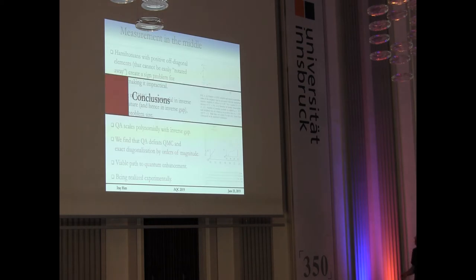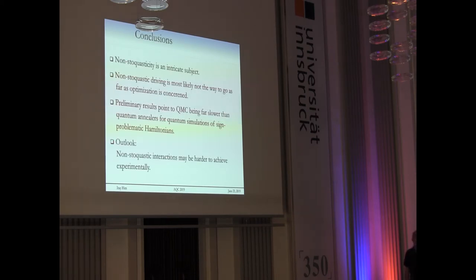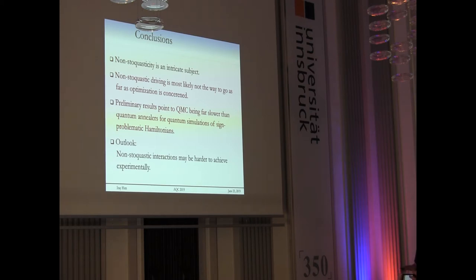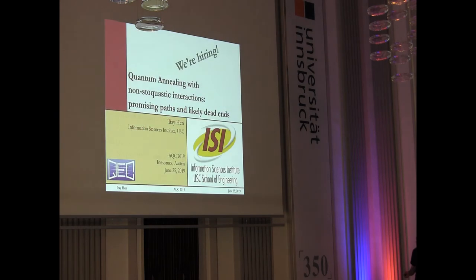To wrap up: non-stoquasticity is a very intricate subject — it's not about the signs of diagonal elements. For optimization, it's maybe not the best way to go, even though there are interesting outlier examples worth investigating. For quantum simulation, we have strong results suggesting quantum annealing should beat everything classical we know. Non-stoquastic interactions are also harder to achieve experimentally, which is interesting in itself. We at the Information Sciences Institute at USC are hiring, so if you're interested, come talk to me.